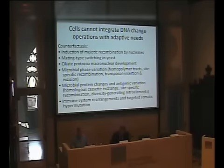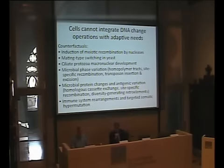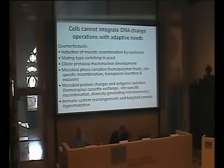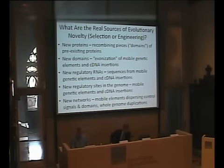It's often claimed that cells can't integrate DNA change operations with their adaptive needs. But we see this in many ways in molecular biology. The induction of meiotic recombination by nucleases is an example. Mating-type switching in yeast. Macronuclear development in ciliated protozoa. Microbial phase variation and antigen variation in both prokaryotes and eukaryotic microbes — there's a wide variety of means. Microbes can engineer the structure of their surface proteins by homologous cassette exchange, by site-specific recombination, and diversity-generating retroelements.